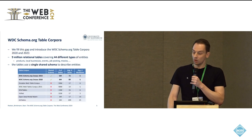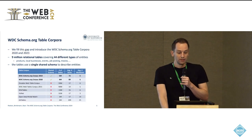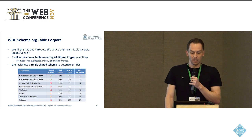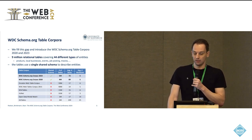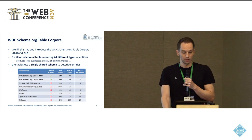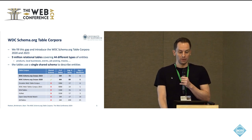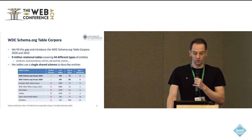This is where we come in with the WDC Schema.org Table Corpora. This corpus contains nine million relational tables which cover over 44 different types of entities, including products, local businesses, and movies for example, and the special thing here is that we are actually using a single shared schema across these tables to describe these entities.